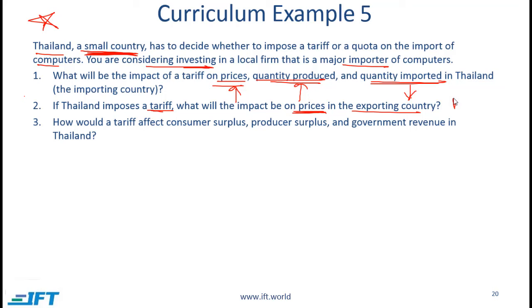How would a tariff affect consumer surplus, producer surplus, and government revenue? Consumer surplus comes down, producer surplus goes up, and government revenue goes up.